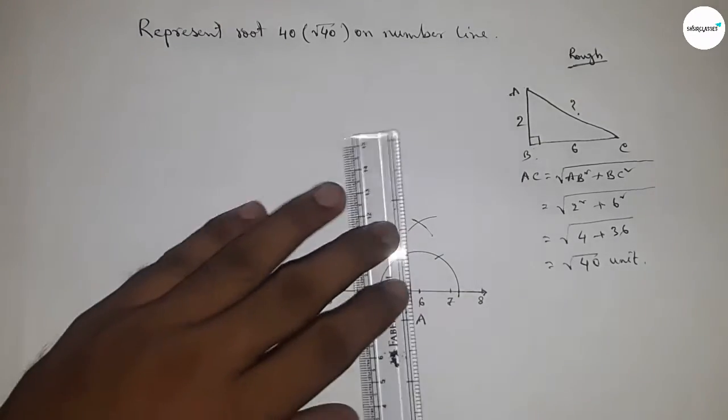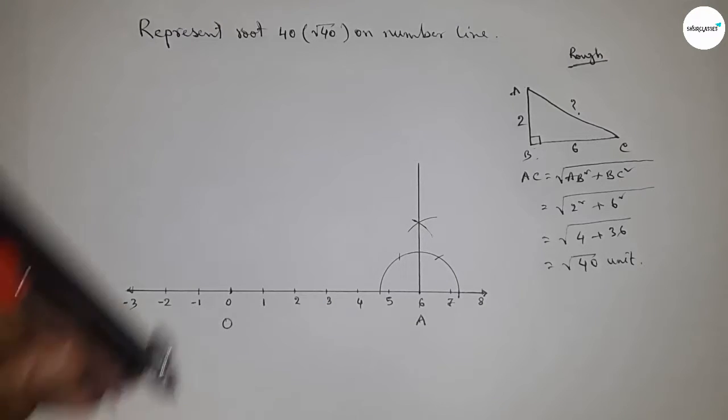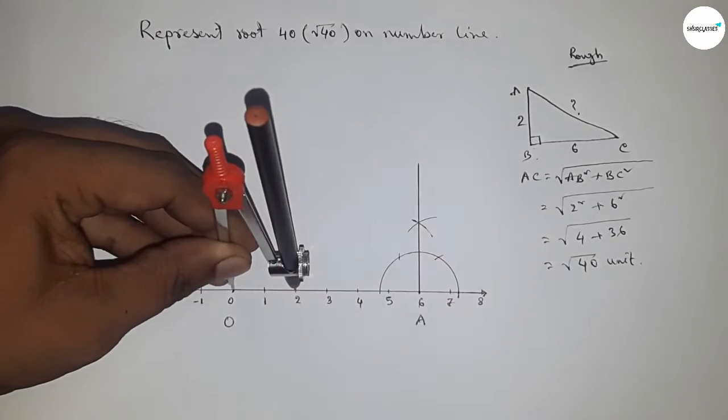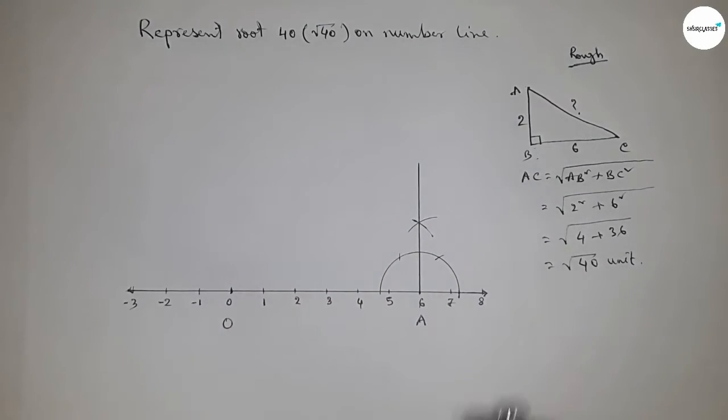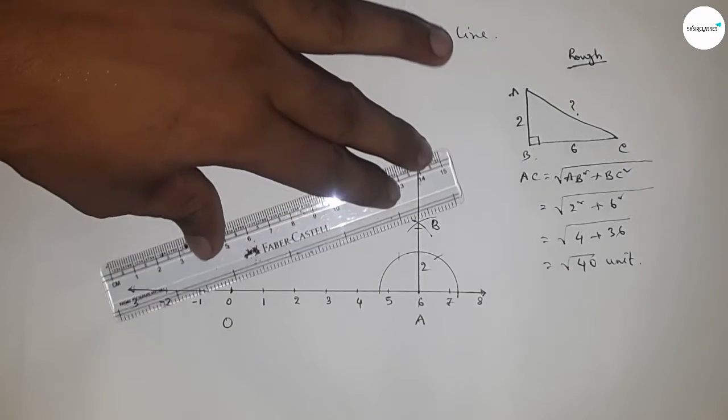Now joining this to get a perpendicular line. Now taking length 2 units by compass and putting the compass here and cut here. So this is B point and this is 2 unit length. Now joining O and B.